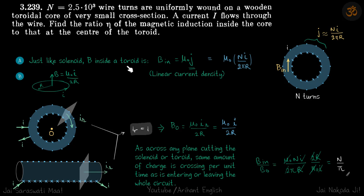Once again, the B inside the toroid is μ₀j and j is ni by 2πr. So we know now what is the B inside, now we need to calculate what is B at the center.